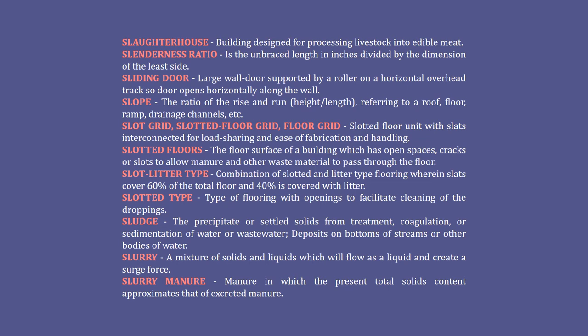Slot litter type: a combination of slotted and litter type flooring wherein slats cover 60 percent of the total floor and 40 percent is covered with litter. Slotted type: a type of flooring with openings to facilitate cleaning of the droppings. Sludge: the precipitate or settled solids from treatment, coagulation, or sedimentation of water or wastewater — deposits on bottoms of streams or other bodies of water. Slurry: a mixture of solids and liquids which will flow as a liquid and create a surge force.